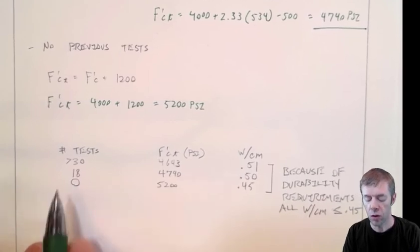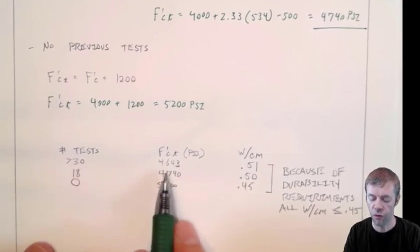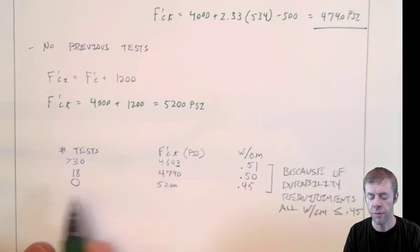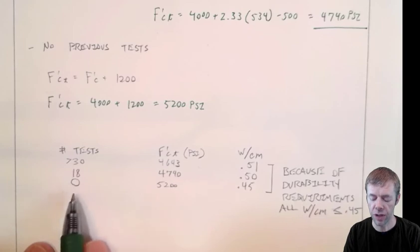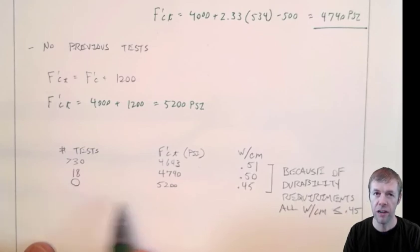So in summary, if I had greater than 30 tests, 4,643. If I have about 18 tests, it's 4,740. If I have zero tests, I'm starting from scratch, 5,200.